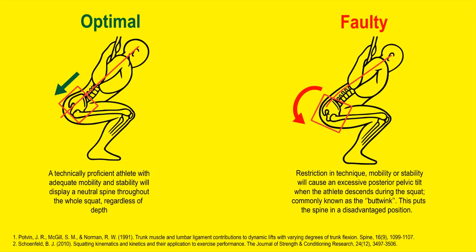If an athlete has a technique, mobility, or stability issue and they squat, one very common symptom is hip pain. If you continue to squat deeply despite those restrictions, you might experience a posterior pelvic tilt — otherwise known as the butt wink. This places the spine in a disadvantaged position and hyperconcentrates all force to one specific area, quadrupling the chance of injury. Minor butt wink is of no issue, but when it becomes excessive that is a problem long term.